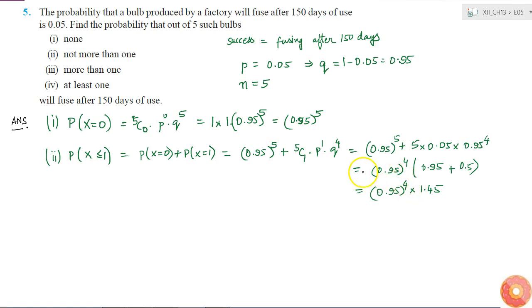Now what is the third part? The third part is the probability that more than one bulb will fuse. That is, I have to find the probability of x greater than 1. So now there are five bulbs, so instead of writing this as p of x equal to 2 plus probability of x equal to 3 plus probability of x equal to 4 plus probability of x equal to 5, all those values I do not know.